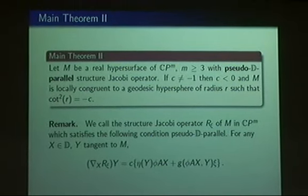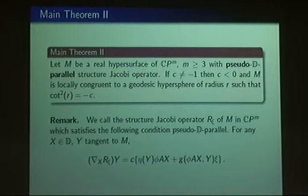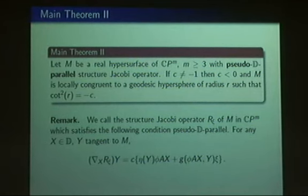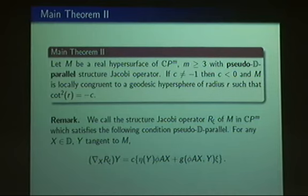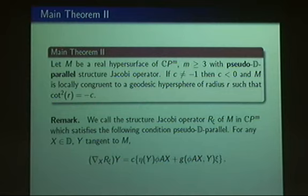So we have the conclusion: M is a real hypersurface of complex projective space with pseudo-D-parallel structure Jacobi operator. If C is not −1, then C is negative, and moreover M is locally congruent to a geodesic hypersphere of radius R such that C = −cot²(R). This concludes the talk.